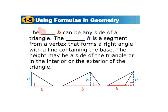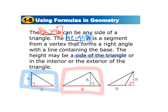The base, also called B, can be any side of a triangle. The height, also called H, is a segment from a vertex that forms a right angle with a line containing the base. The height may be a side of the triangle, like in the first example where the height is the side, or it can be in the interior or the exterior of the triangle.